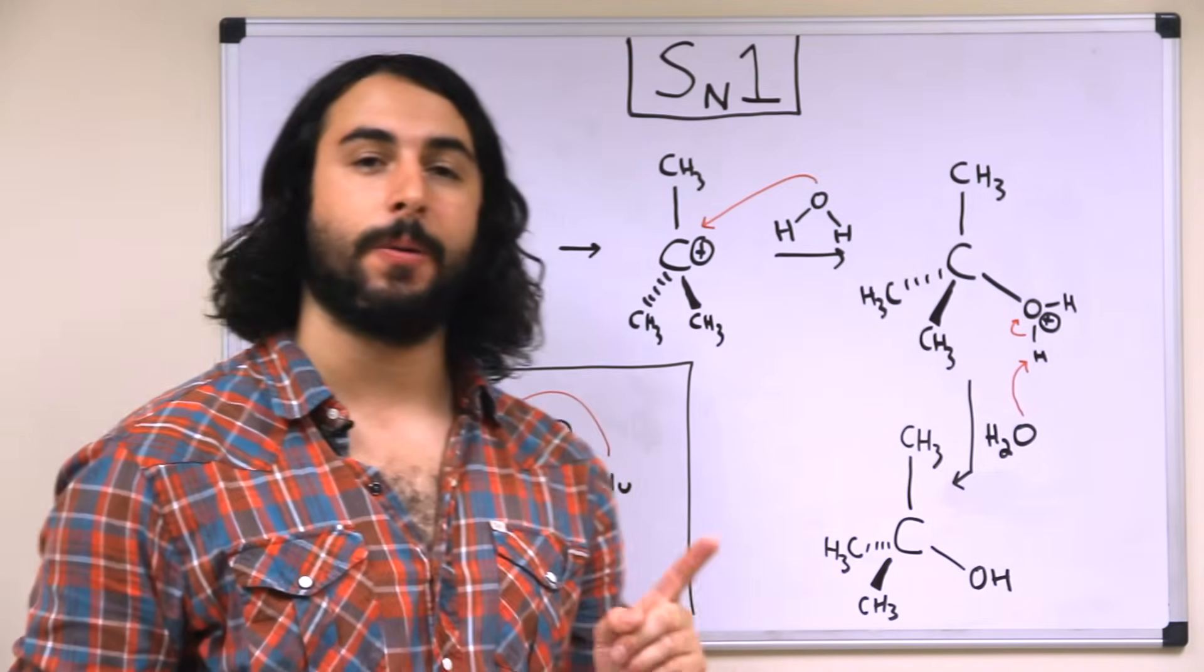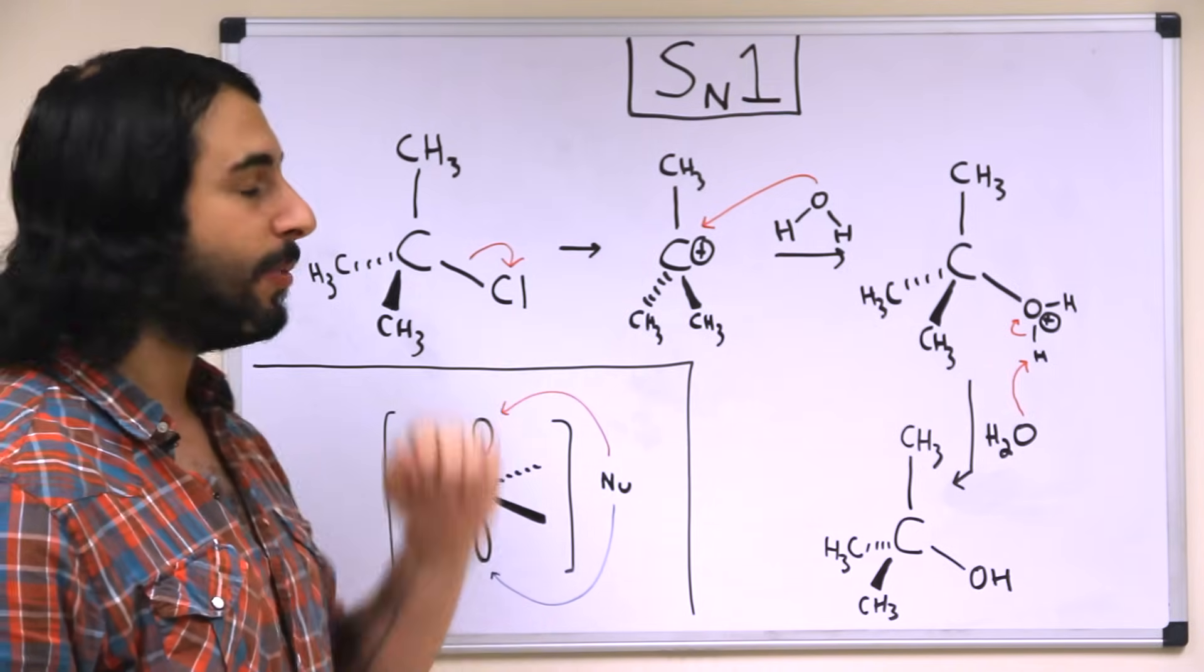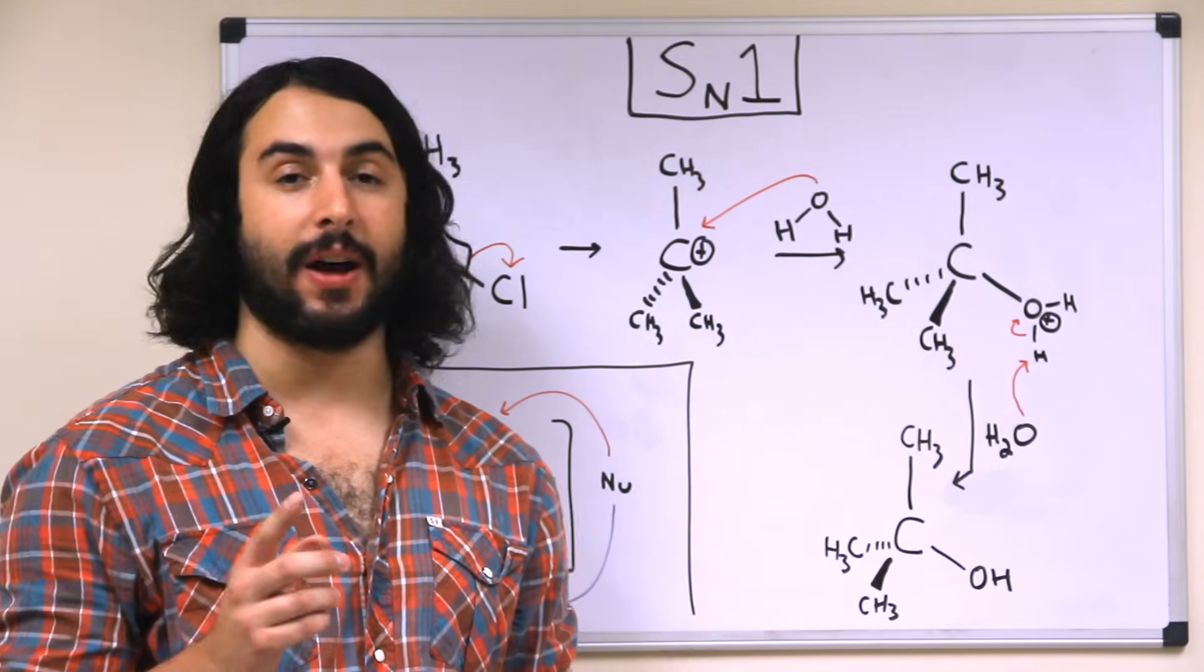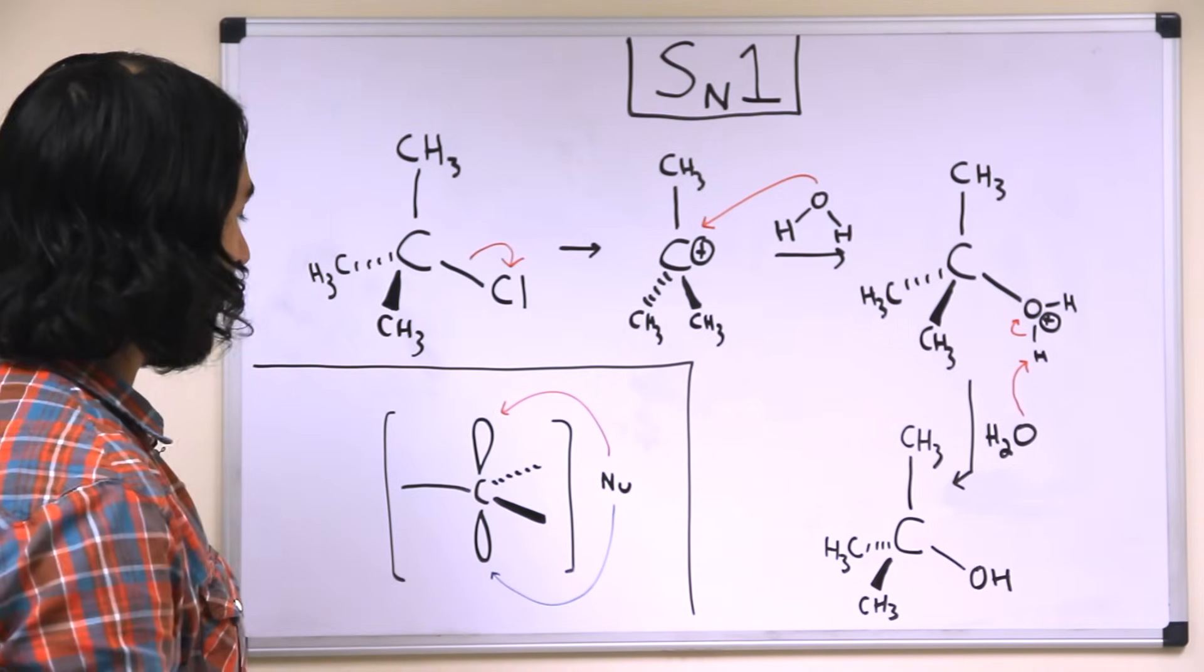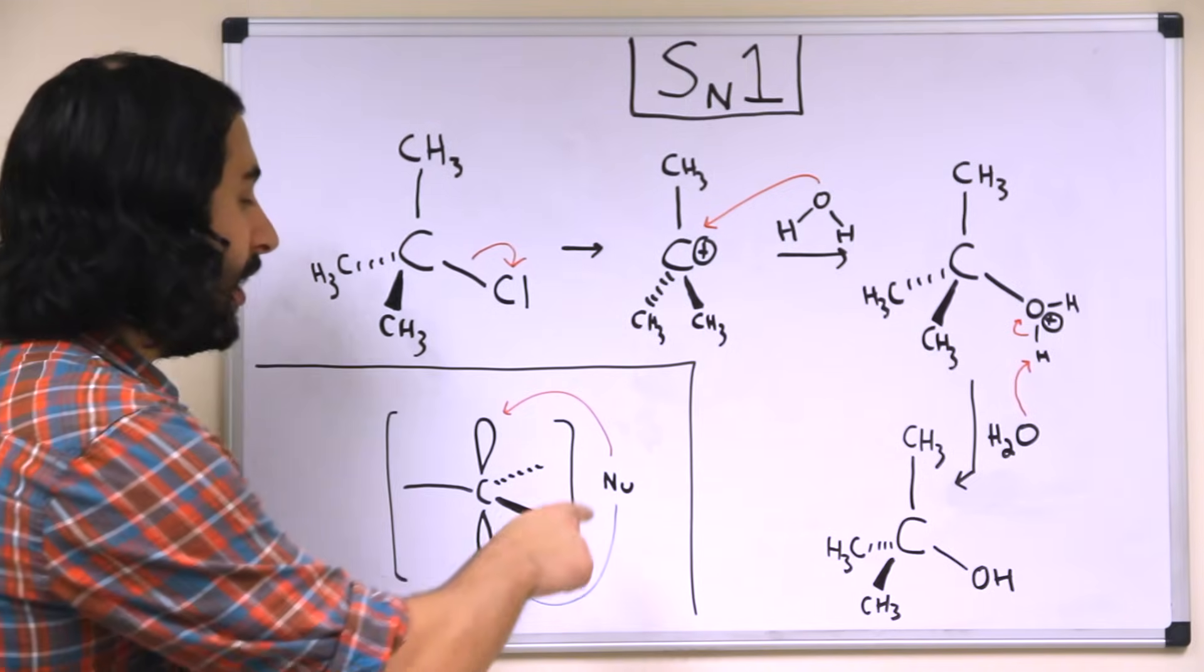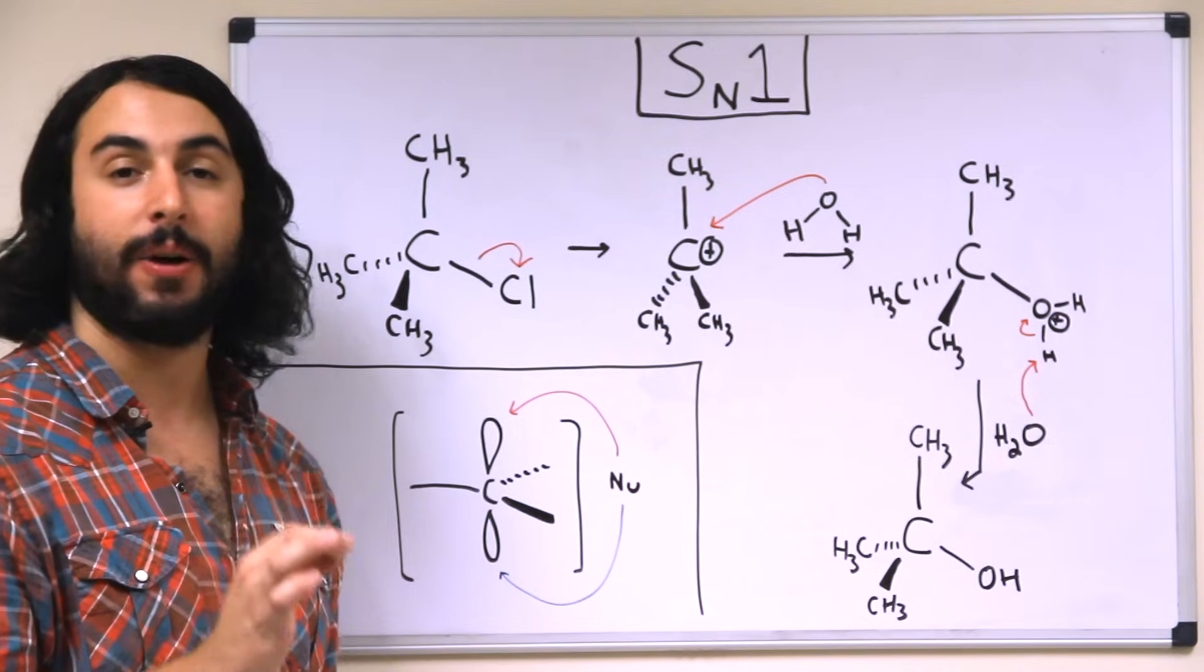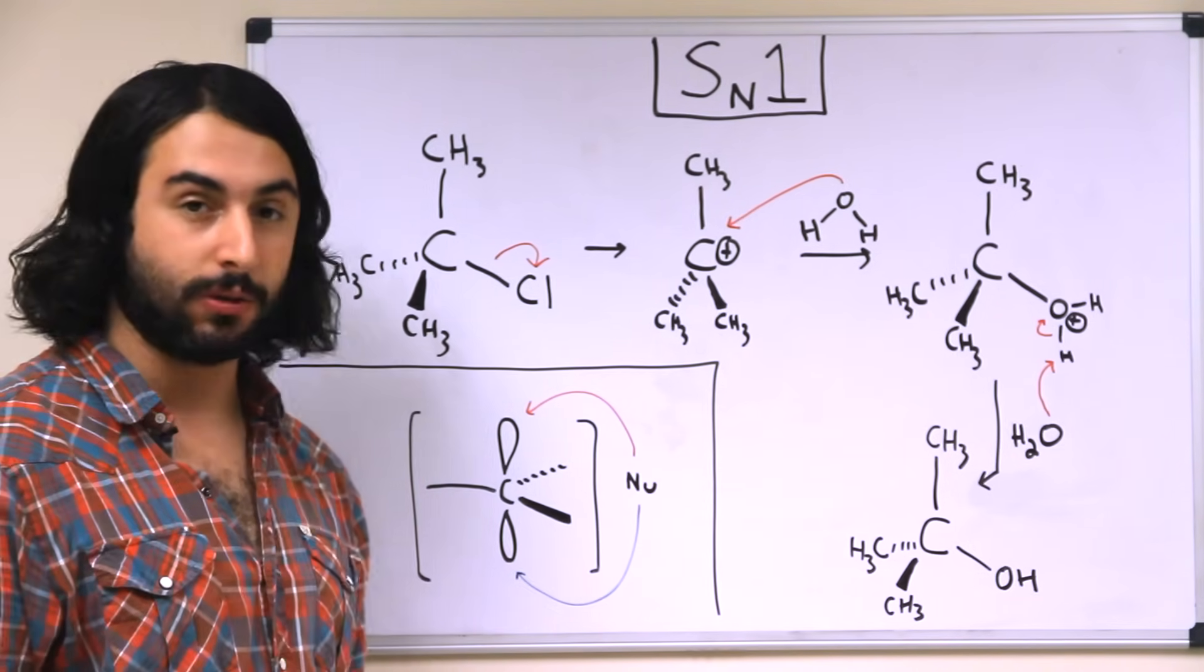So one very important part about the SN1 mechanism is that because the carbocation intermediate is trigonal planar, that means that a nucleophile can attack from either side. Remember that any time we have a reaction occurring, it's because something is dumping electrons from its highest occupied molecular orbital and putting them into the lowest unoccupied molecular orbital.